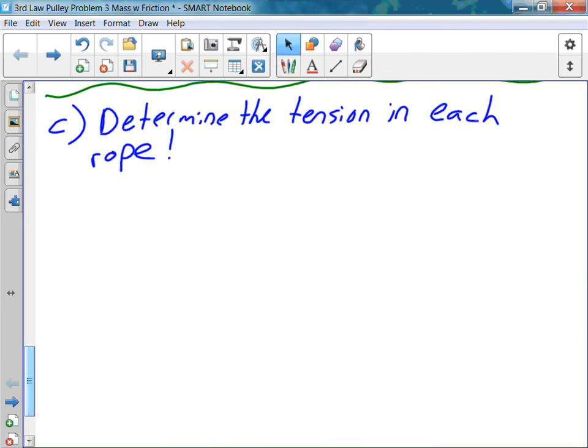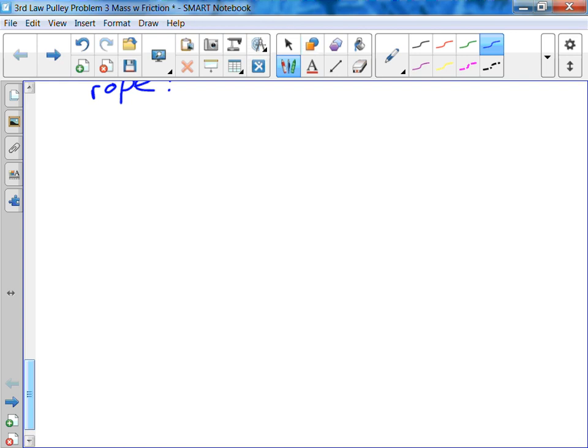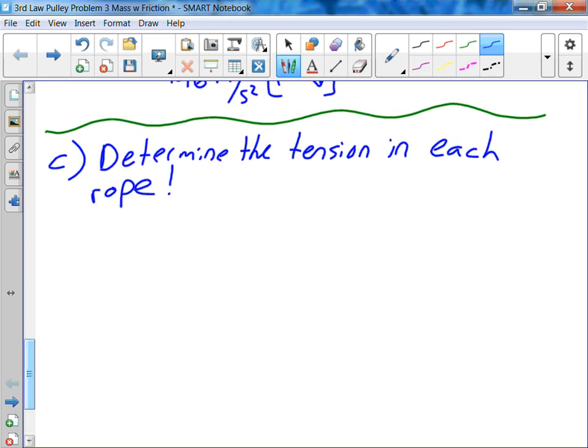When you guys were figuring out tensions before for any just two mass systems, what did you do? You figure out the tension because it's an internal force to the system. So in this case, because there isn't really a last type of block, for T1 we're going to look at block A, and then for T2 we're going to look at block C. By analyzing those two free body diagrams, we can figure out the entire tension.